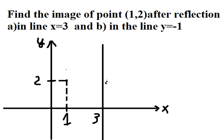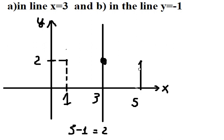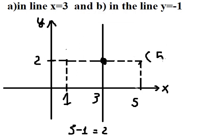So for the point, they will reflect on this line. So we need to find the distance from number 1 to number 3, that is about number 2 because 3 minus 1 we have number 2. So on this point here, they will go to number 2 in here, so that is about number 5. So the image of the new point, that is about number 5.